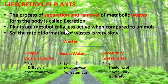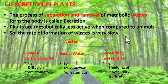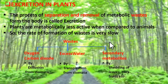Metabolic reactions are slow in plants, so waste is also produced slowly. Now, what are the types of waste produced in plants? There are three types: gaseous waste like oxygen and carbon dioxide, liquid waste which is excess water, and the third type — secondary metabolites. Secondary metabolites are also a type of waste, which we will see in the next slide.